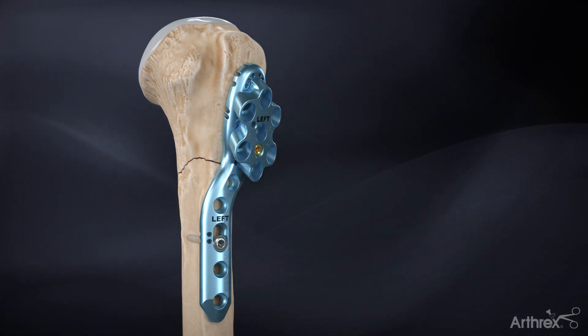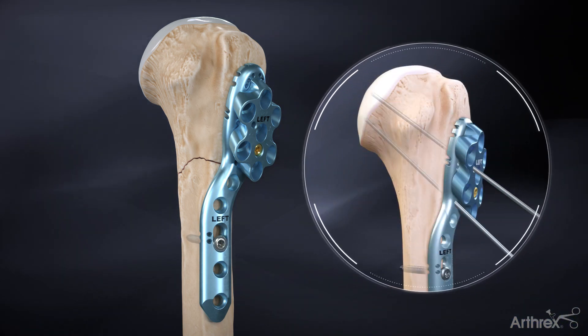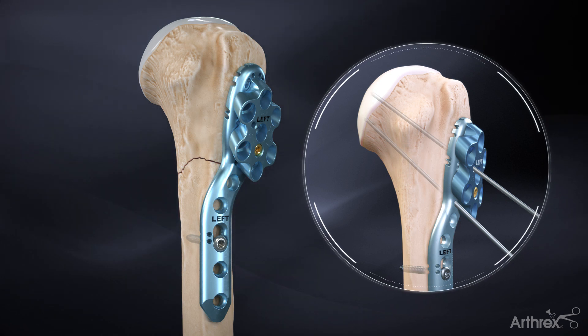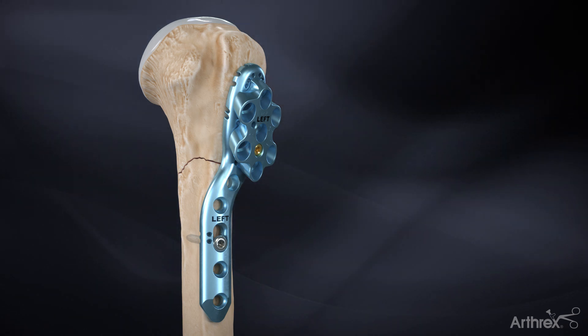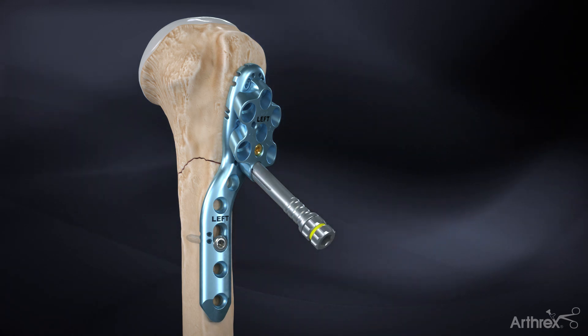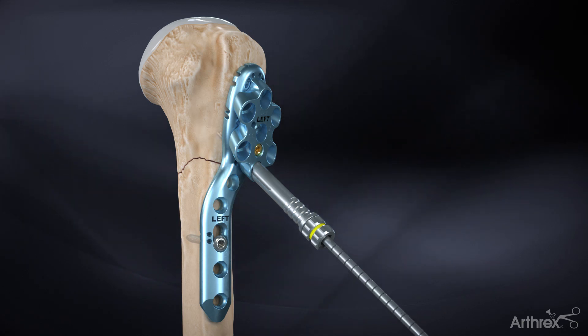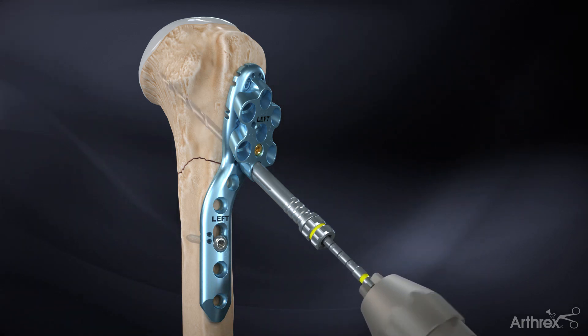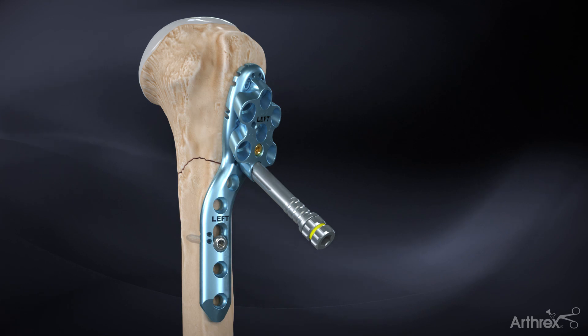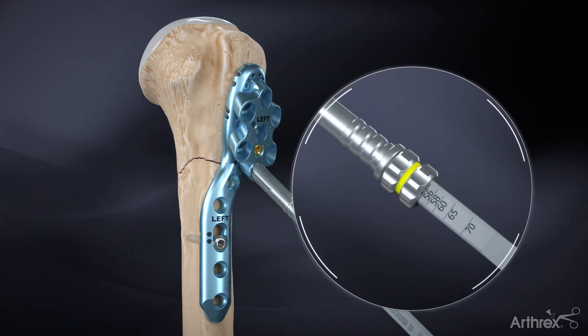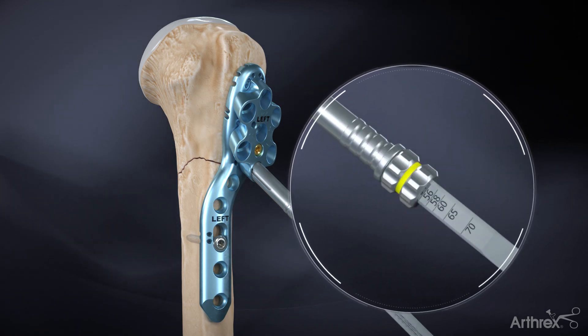Verify the proximal screw trajectory by inserting K-wires through the aiming block and verifying using fluoroscopy. Insert the screw sheath into the alignment guide followed by the 3.5 millimeter drill guide. Advance the 3.5 millimeter step drill through the sleeve until the drill tip reaches subchondral bone. Using the depth guide, measure to determine the desired screw length to be inserted.